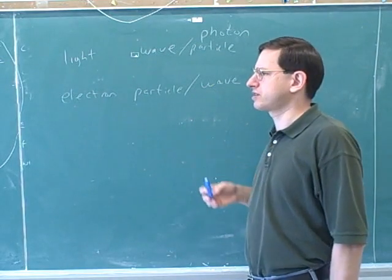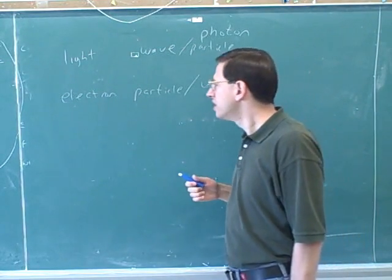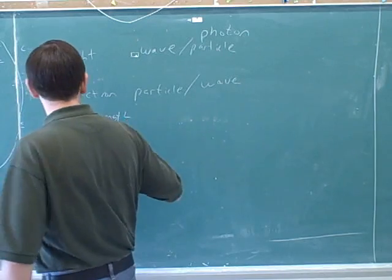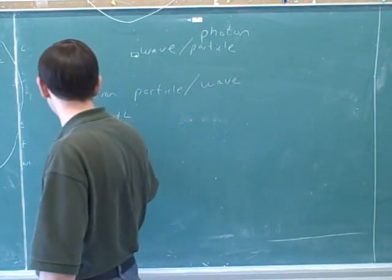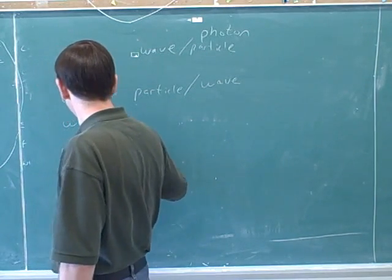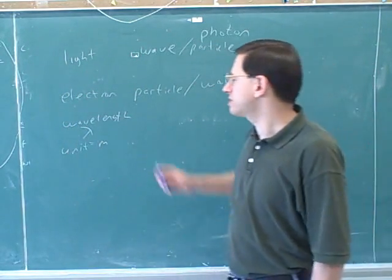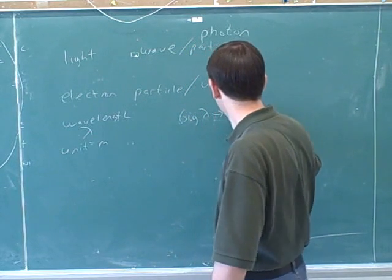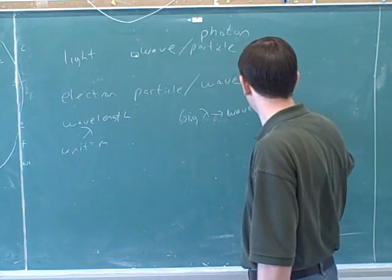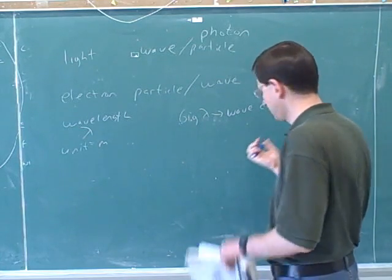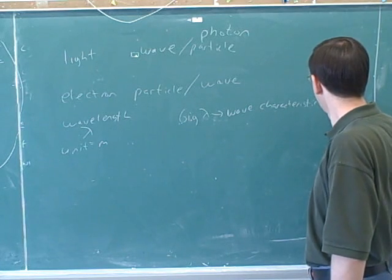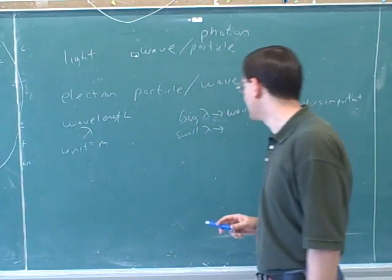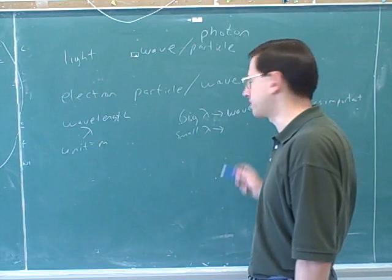By the way, how can you describe when the wave characteristics of something are important and when the particle characteristics are important? Well, we know that a wave is characterized by a wavelength, right? Do you remember what the symbol is for wavelength? Lambda. Right, and what's the SI standard unit for wavelength? A meter. Good. Well, it turns out that the wave characteristics of an atom are important when it has a big wavelength. And when you have a small lambda, it tends to be the particle characteristics that are important. The wave characteristics are less important.